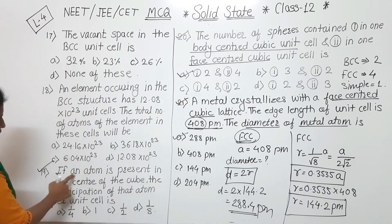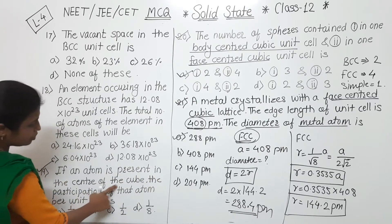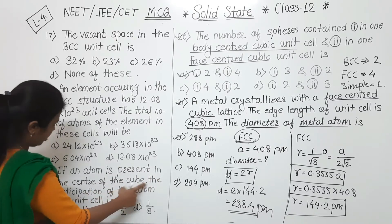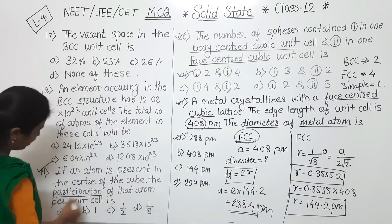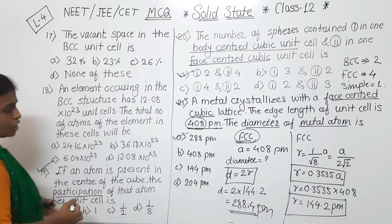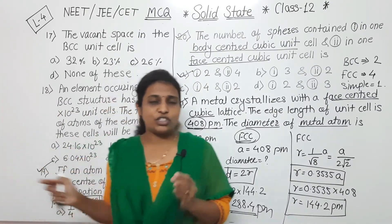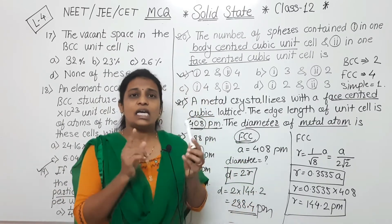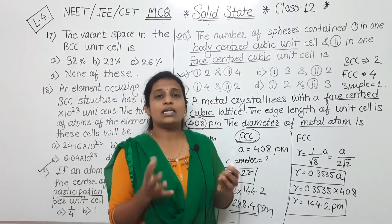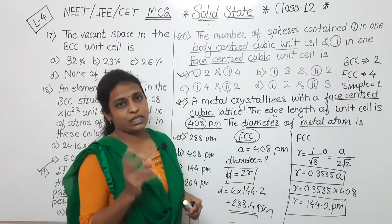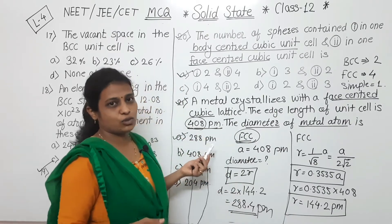Next one: if an atom is present in the center of the cube, the participation of that atom per unit cell is — we have four options. We are asked: if the atom is at the center, how much participation will that atom have? Let's discuss that.